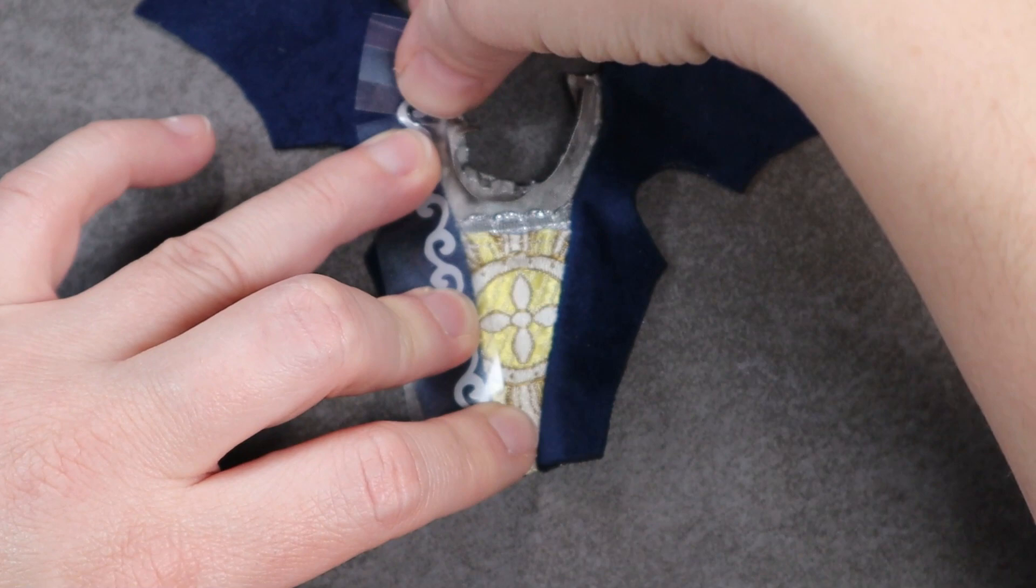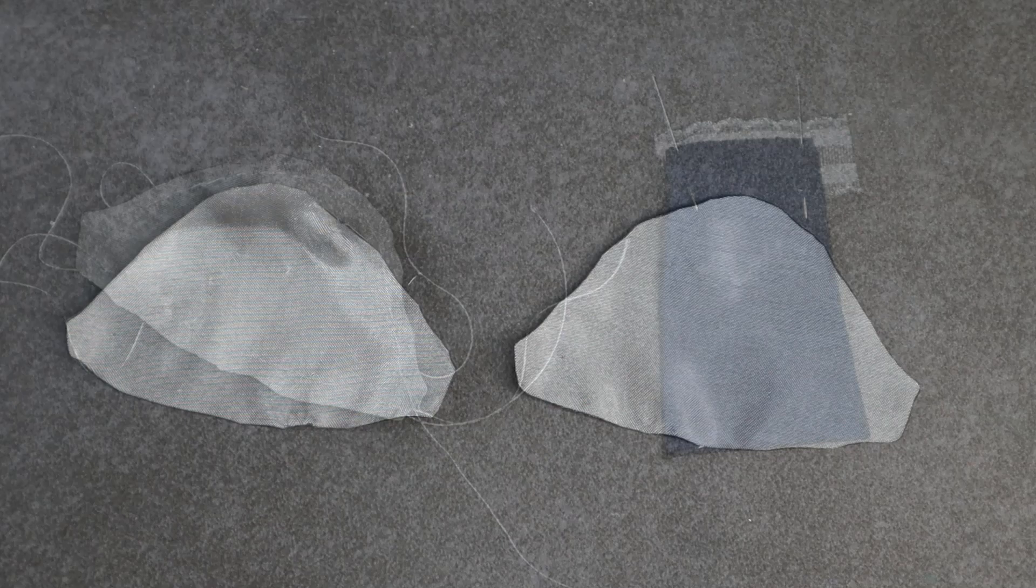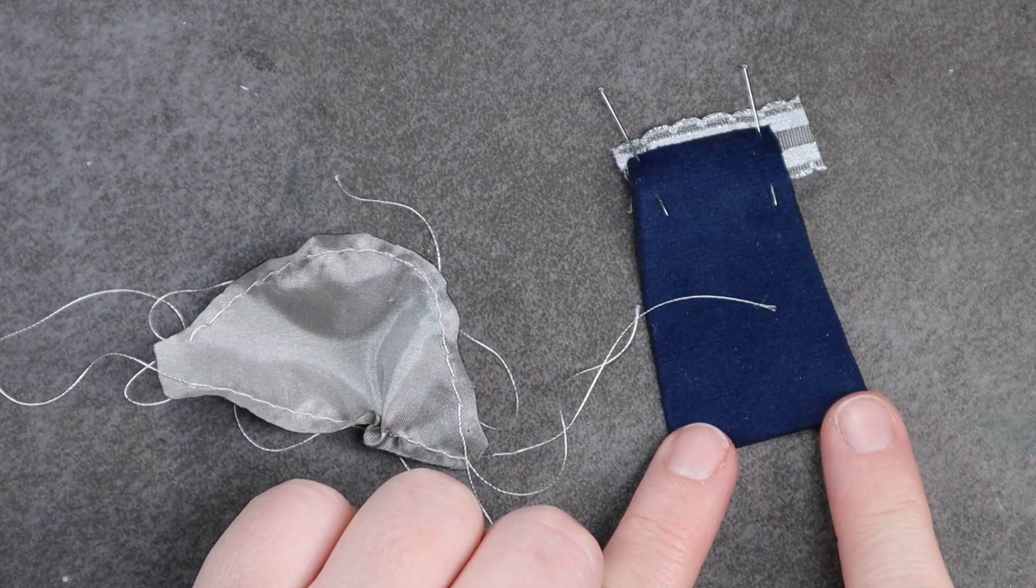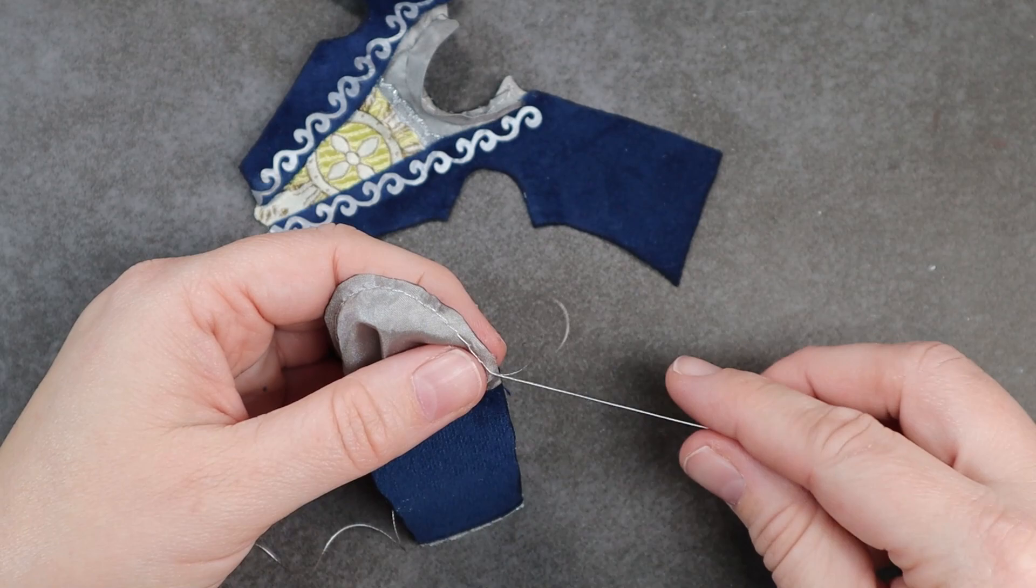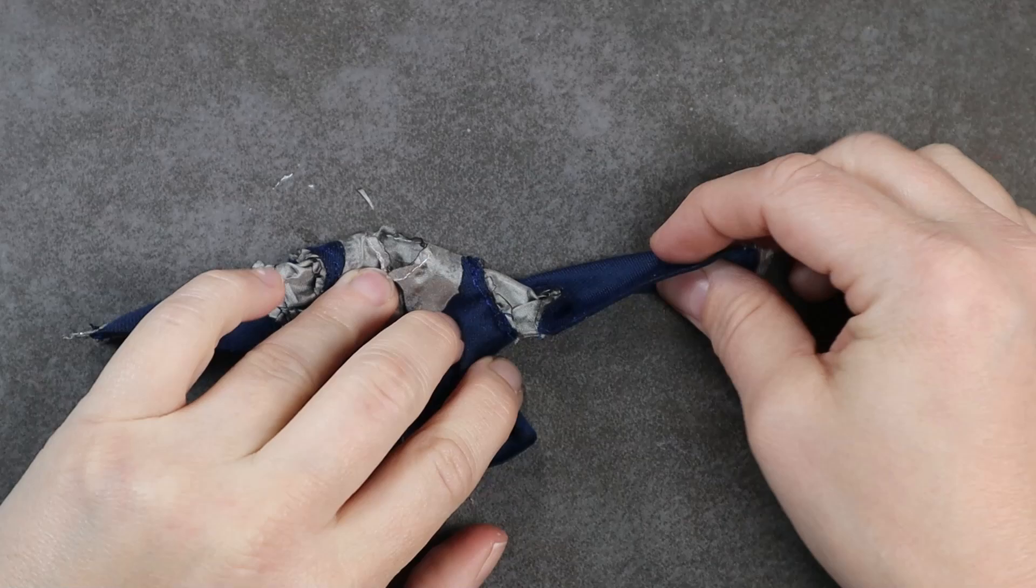For the puffed portion of the sleeve, the first thing I do is do gathering stitches along the top and the bottom seam. For the bottom portion of the sleeve, I attach a little bit of ribbon trim to the cuff. And then I go ahead and attach those two sleeve pieces. Once the sleeves are complete, I can gather up that puffed edge and attach it to the bodice. Now I can go ahead and sew up the side seams of the bodice as well as the arms.